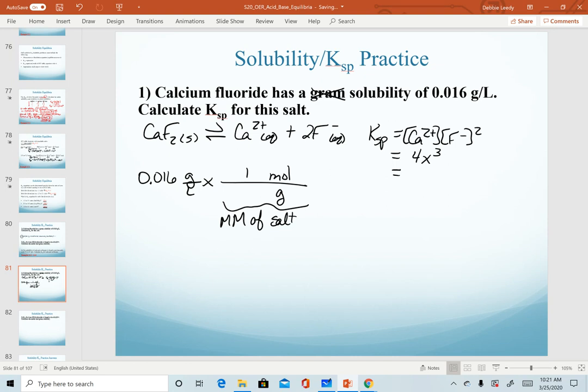For calcium fluoride, when we check its molar mass in our periodic table, calcium has a molar mass of 40.078 plus two fluoride ions at 18.998. We get a molar mass of 78.074 grams. This gives us a molarity of 2.0493 × 10⁻⁴. And that is now in molarity. And that is my x value for these problems.